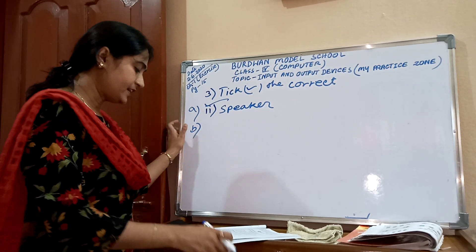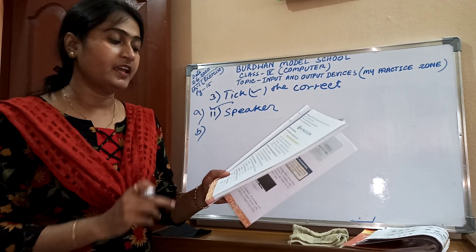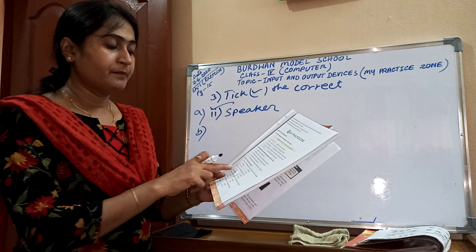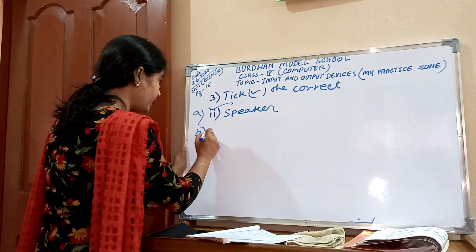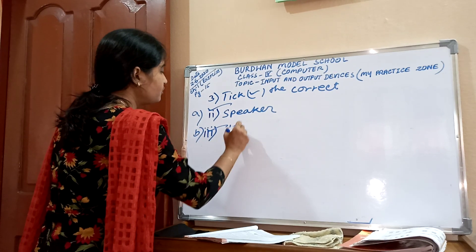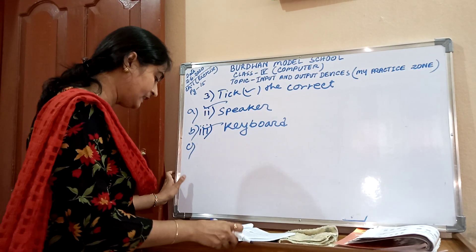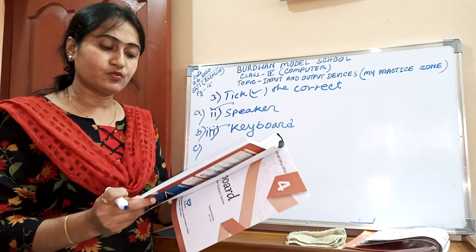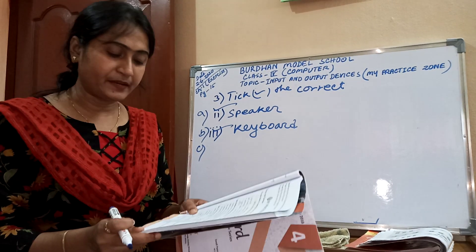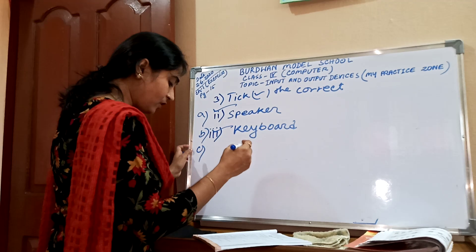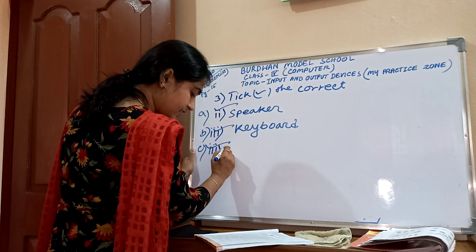Number B: Which of the following is an input device? Printer, speaker, keyboard, and monitor. Printer, speaker, and monitor are output devices — only keyboard is an input device, that is option 3. Number C: Which of the following devices is used to get the hard copy of the data? Monitor, speaker, mouse, and printer — from printer we can get a hard copy, so option 3 is the correct answer: printer.